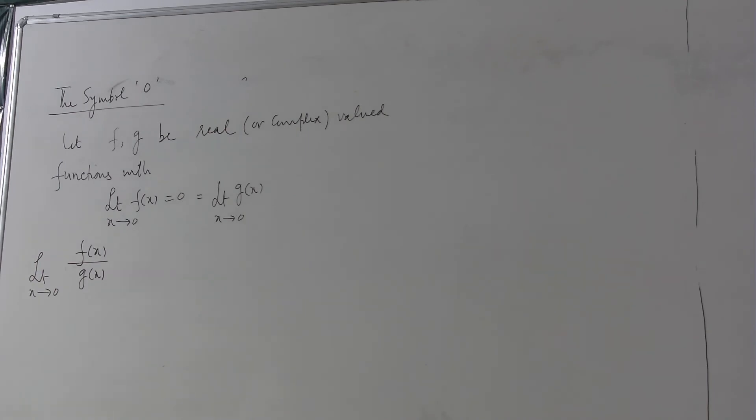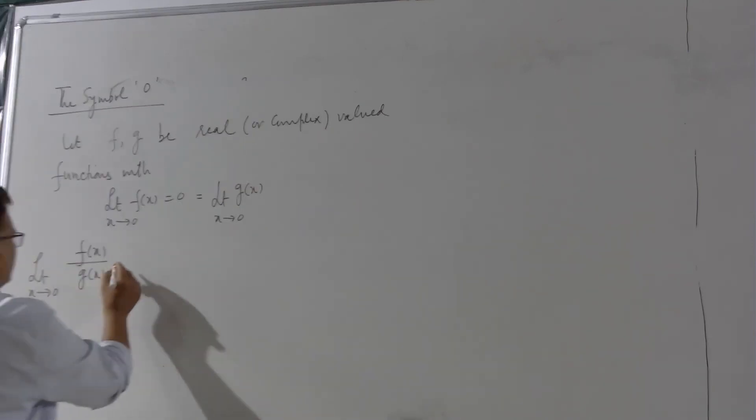You cannot say immediately the limit of f and g, f quotient g. Now this limit may be 0 or it may be infinite also. It depends on the speed of approaching 0. Now if f approaches to 0 faster than g this limit will be 0.